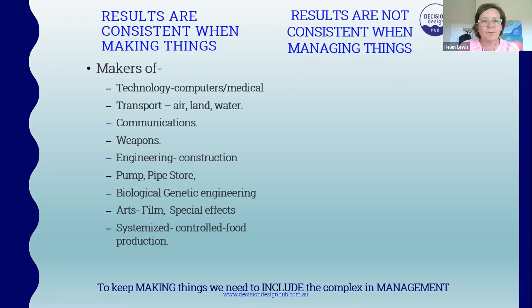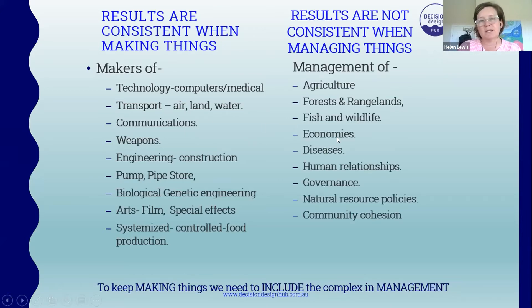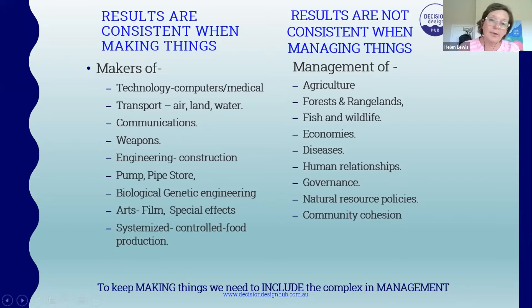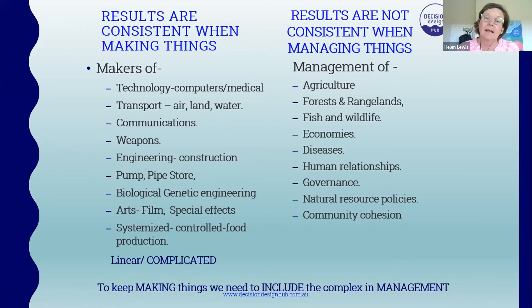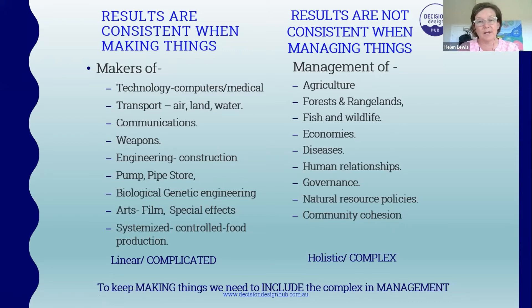Humans are very good at making things and we have consistent results when we make things. However, we have inconsistent results when we manage things — in agriculture, landscape management, human relationships, and economics. The difference is that making things is a linear, complicated process, whereas managing people, environment, and prosperity is holistic and complex. We're great at complicated, but we have inconsistent results with complexity. Yet to keep making things, we need to include the complex in our management and decisions.